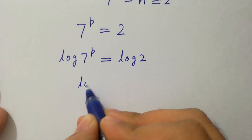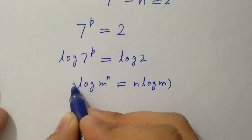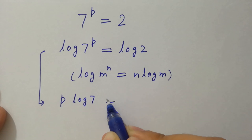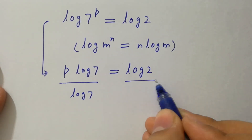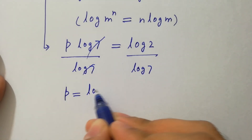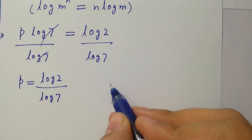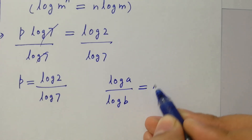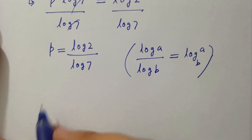Since log m to the power n equals n log m, then p log 7 equals log 2. Using log A over log B equals log A to the base B, p will be equal to log 2 to the base 7, which is the value of p.